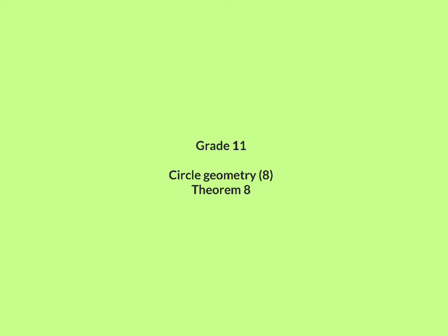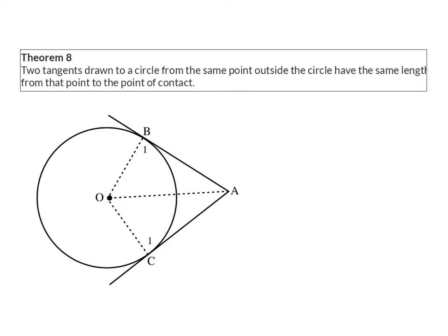In this lesson on circle geometry, we are looking at Theorem 8. Two tangents drawn to a circle from the same point outside the circle — in our case, point A — have the same length from that point to the point of contact. So our two tangents AB and AC will be equal in length.